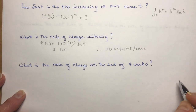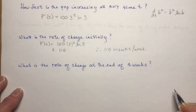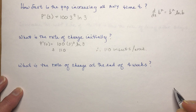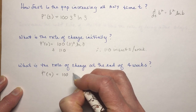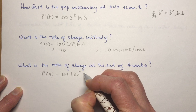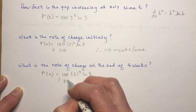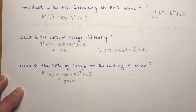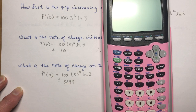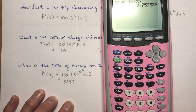What is the rate of change at the end of 4 weeks? We want P'(4) = 100 times 3 to the power of 4 times ln(3). That's 100 times 81 times ln(3) = 8,100 times ln(3). Working that out on a calculator gives approximately 8,899 insects per week.